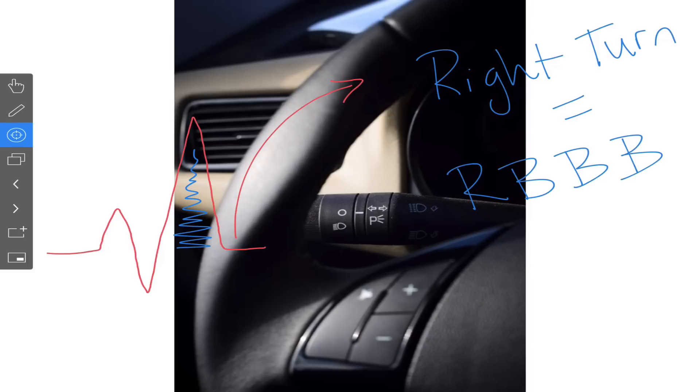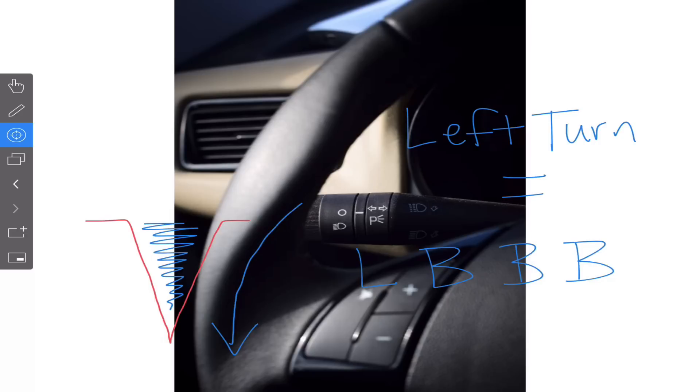If we're moving up, up and to the right, that's a right turn or a right bundle branch block. And the opposite is true. If we take this and we go down with our turning signal or down before the J point, we have a left turn or a left bundle branch block.